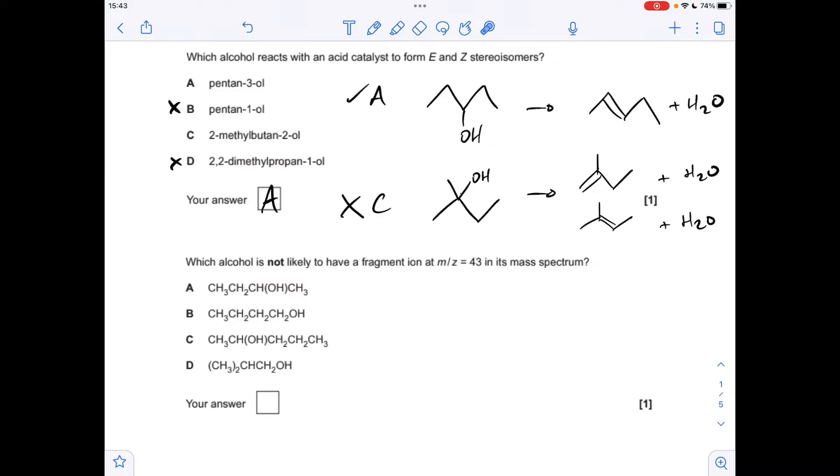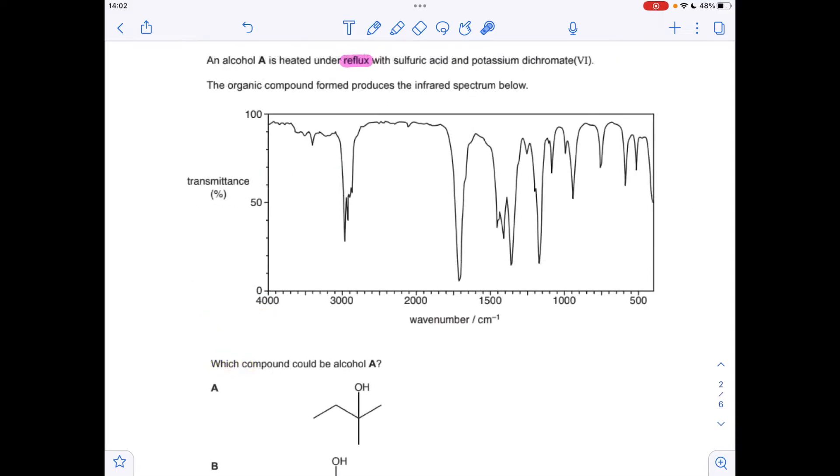Next question: which alcohol is not likely to have a fragment ion at m/z 43 in the mass spectrum? We've got to think about what could cause that fragment, it's down to a C3H7O+ ion. Which of these won't show that? The answer is the first one. You can see I've highlighted the C3H7O part of the other three, less easy to see that one but it is C3H7O.